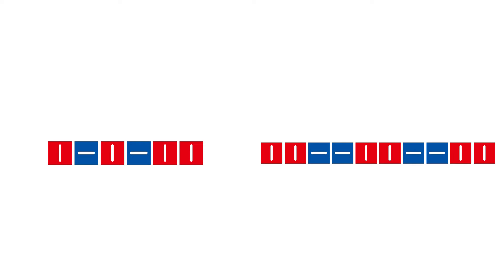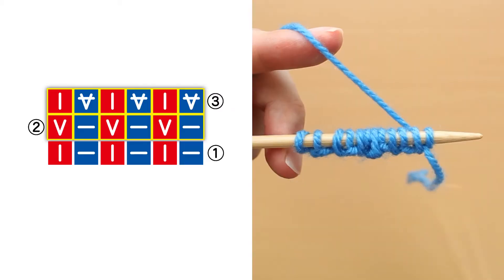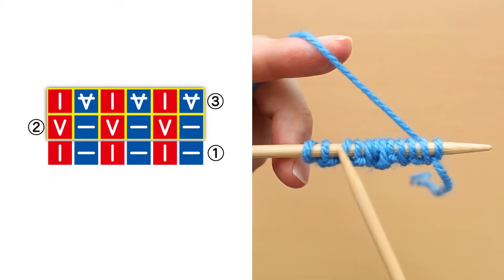On the other hand, when making a 1 by 1 rib with 2 knit stitches on the right end and 1 knit stitch on the left end, or a cast-on of a 2 by 2 rib, you have to knit double knitting in 2 rows.